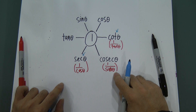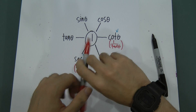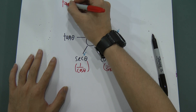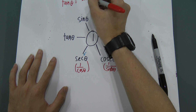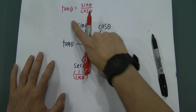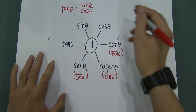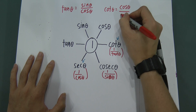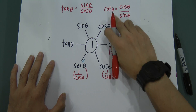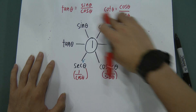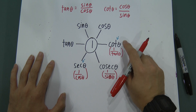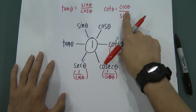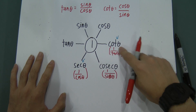From this diagram you can also see three very important formulas. Tangent equals sine over cosine — I write: tan θ = sin θ / cos θ. Cotangent equals cosine over sine — I write: cot θ = cos θ / sin θ. These two formulas are ones you will always use. You can also derive things like secant equals tangent over sine, but these two are the most important ones to remember.